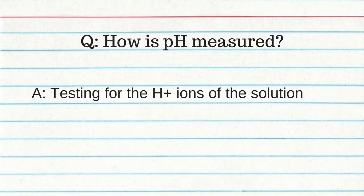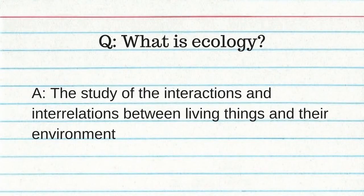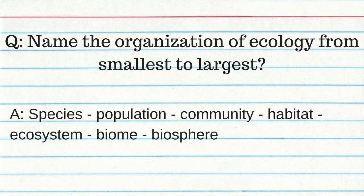What is ecology? The study of the interactions and interrelations between living things and their environment. Name the organization of ecology from smallest to largest: species, population, community, habitat, ecosystem, biome, and biosphere.